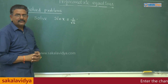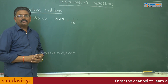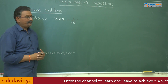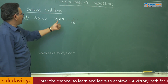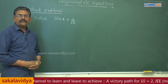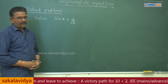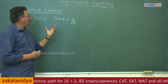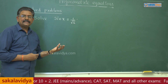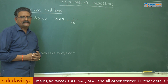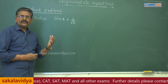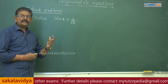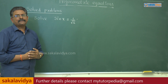Let us solve problems on trigonometric equations. The first problem: solve sin x = 1/√2. So, whose value of sin is equal to 1/√2? We know that sin 45° or sin(π/4). So π/4 is the principal value.